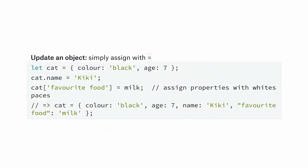If you want to update an object, you can just use dot notation — for example, 'cat.name = "Kiki"' — and now you have a new property called name. If your property has a space in it, maybe from a CSV file, you can use square bracket notation instead. The dot syntax is actually shorthand for converting to a string inside square brackets.